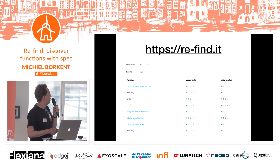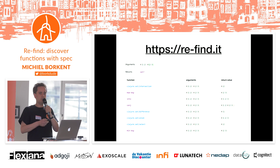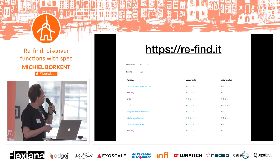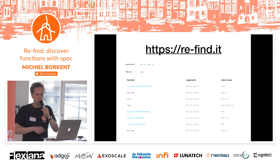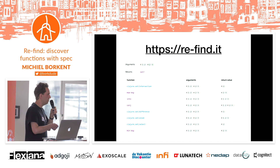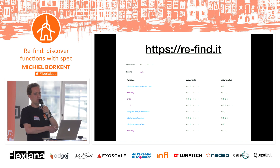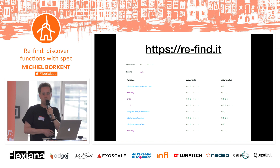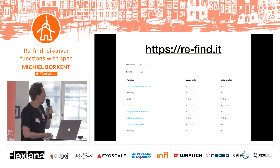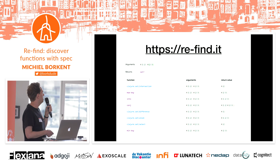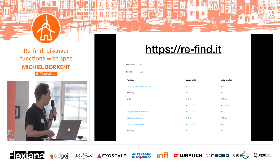So this is how it looks. It's hosted at refind.it, so it's easy to remember. You can give it some arguments that you have in mind or the exact match that you expect. But you can also give it a predicate — like, I want to give these two sets and I expect a set back but whatever set, I don't care. Just give me all the functions that return a set given these arguments. So you get intersection, set difference, set union, set select, but also max key, into, et cetera.